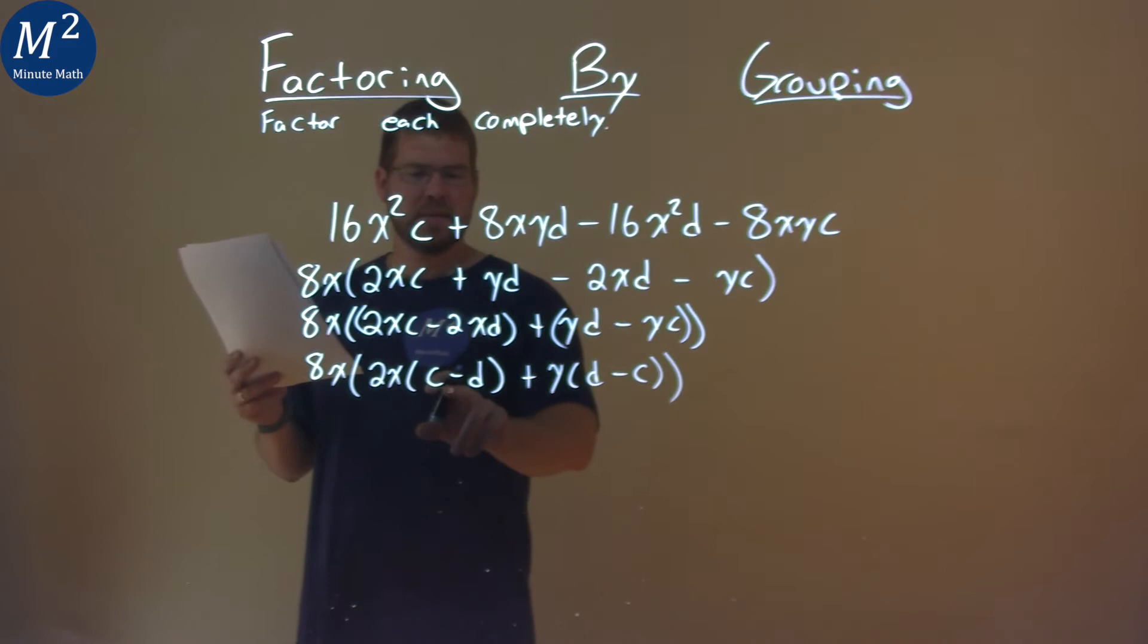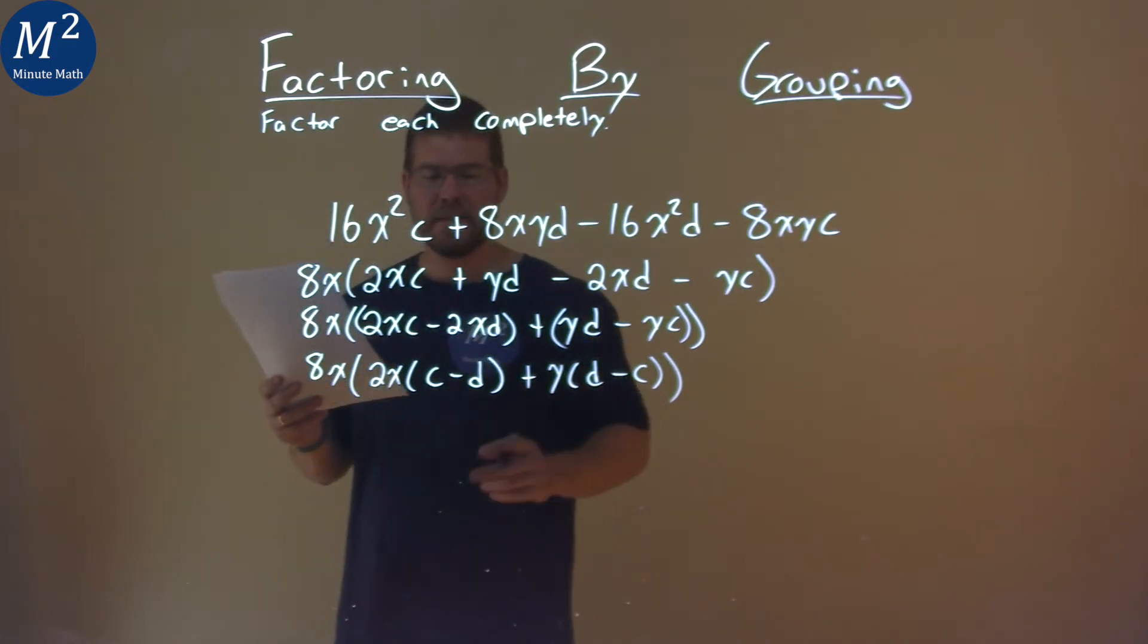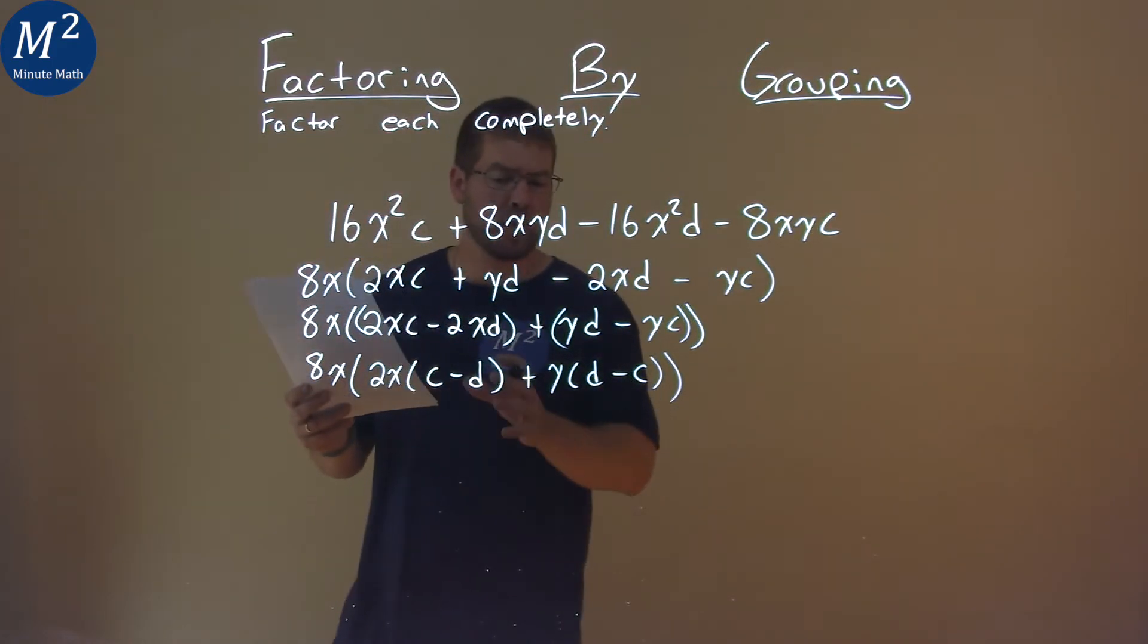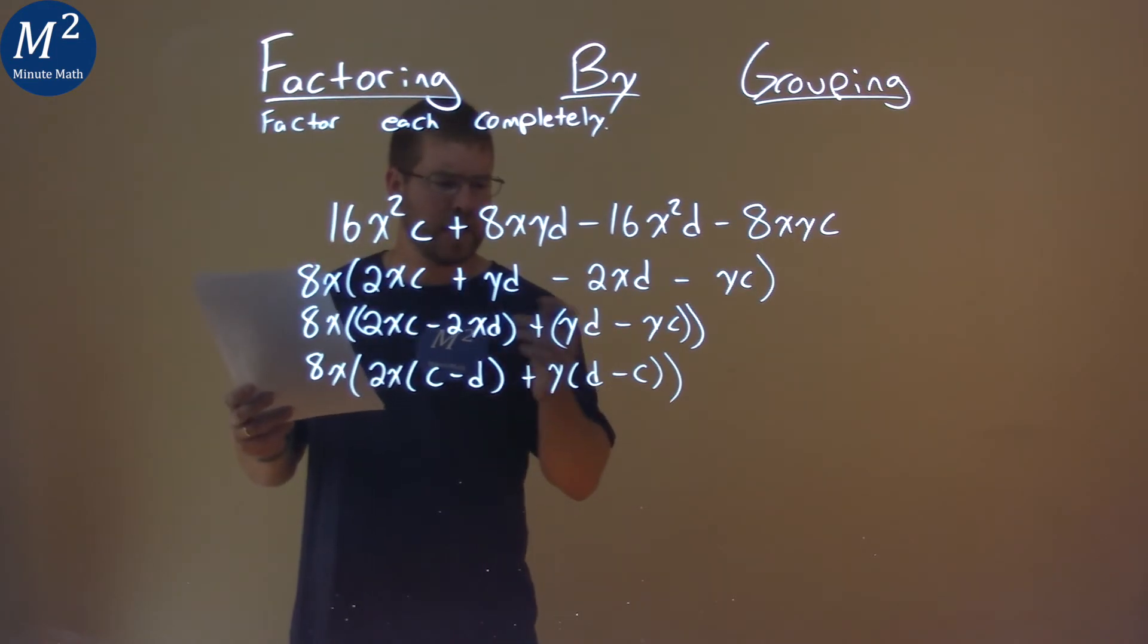c - d is very close to d - c, and I know by grouping I need to pull that out. So if I change this around, if I pull out a negative from both of them, this becomes negative, that becomes positive, and this becomes negative.